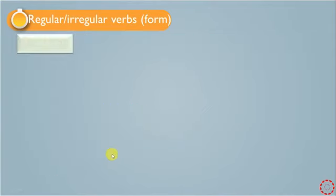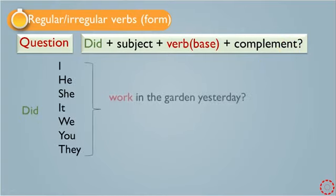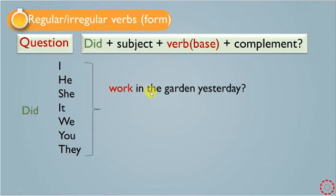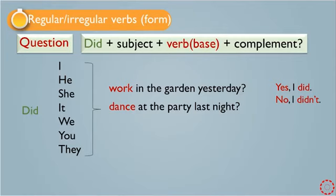For the question form, we move 'did' to the beginning of the sentence, followed by the subject, then the base form of the verb, then the complement, and a question mark at the end. For example: 'Did he work in the garden yesterday?' — we say 'work,' not 'worked,' because we have did. You can answer with a short answer: 'Yes, I did' or 'No, I didn't.' Another example: 'Did she dance at the party last night?' and 'Did they play tennis last weekend?' — we say 'play,' not 'played,' because we have did.